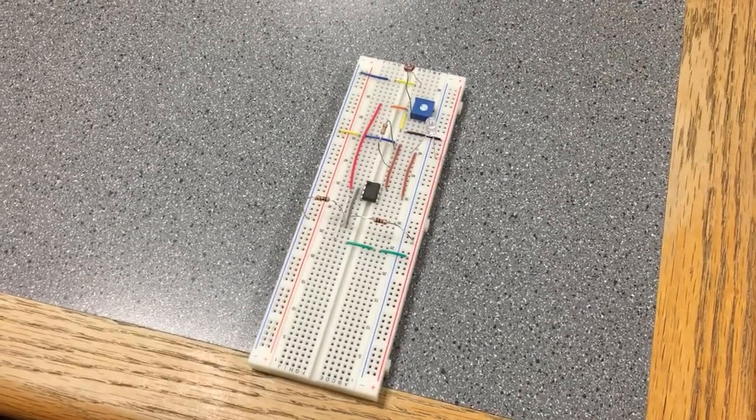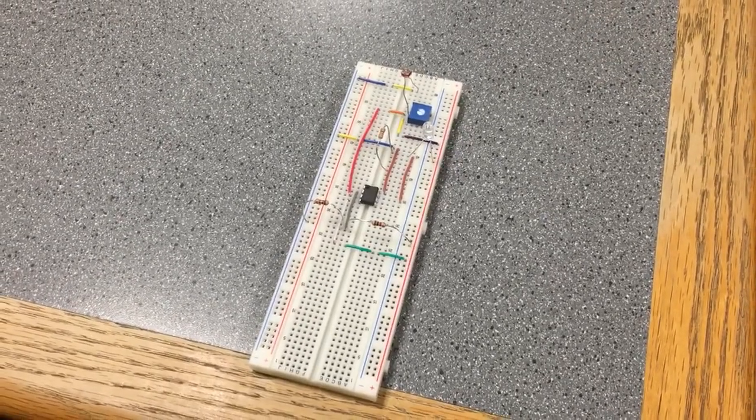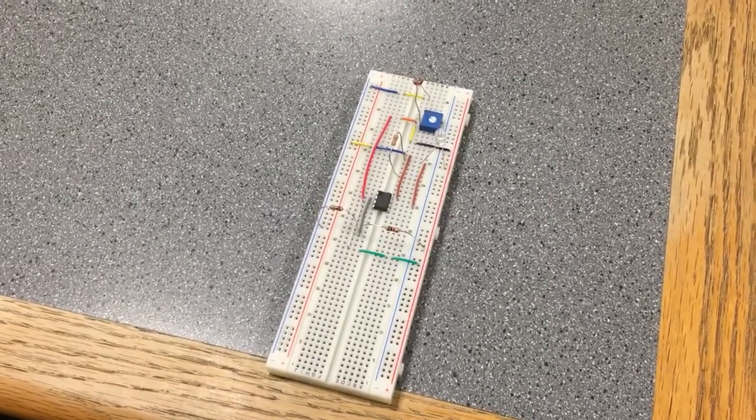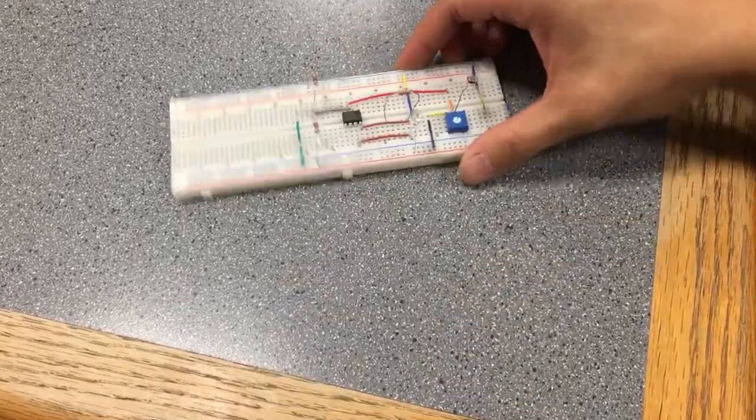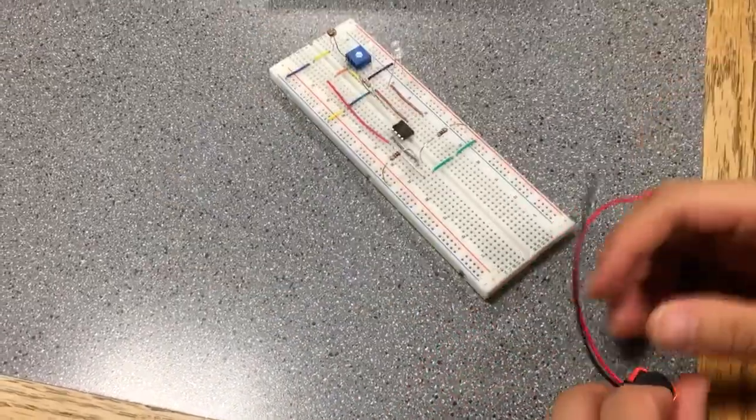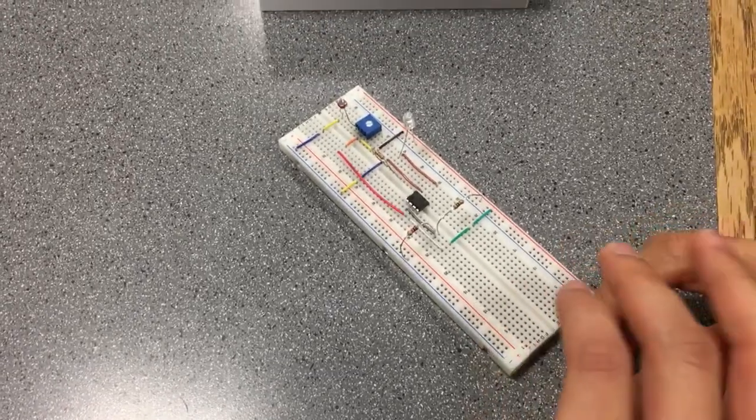for this is, for example, let's say you're using your cell phone outside. Obviously because of the sunlight you can't see anything, and then the light gets brighter. So let's put it together. I'm gonna connect the negative lead right here.